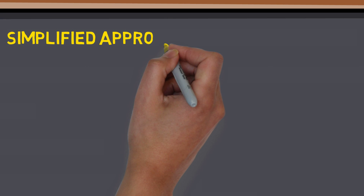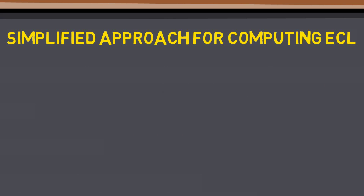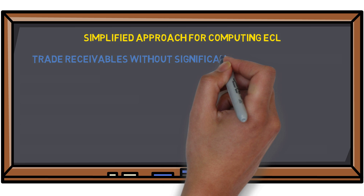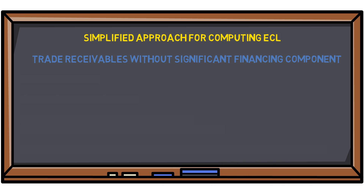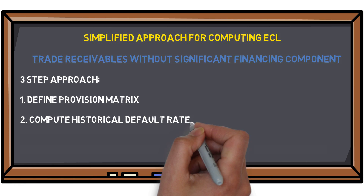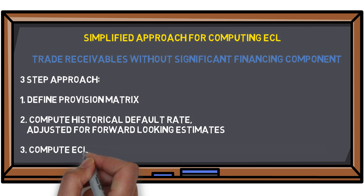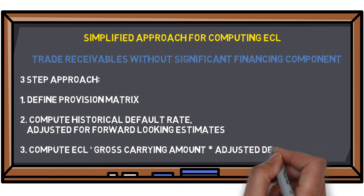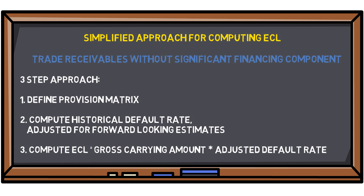Let us now discuss the simplified approach for computing ECL. This approach is applicable to trade receivables without a significant financing component. The process has three steps: first, define a provisioning matrix based on age-wise bucketing of trade receivables according to credit policy; second, compute historical default rates and adjust them for forward-looking estimates; third, compute ECL by multiplying the gross carrying amount of the trade receivable by the adjusted default rate.